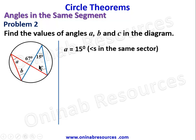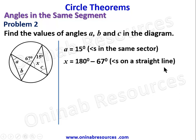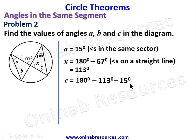Now c and b are in the same sector, but both are unknown so we need to find one first. We name the angle on the straight line as x, finding x to be 180 degrees minus 67 degrees — angles on a straight line — which gives 113 degrees. From here we get c equal to 180 degrees minus 113 degrees minus 15 degrees, that is angles of a triangle summing to 180 degrees, so c is equal to 52 degrees.